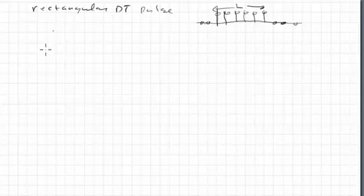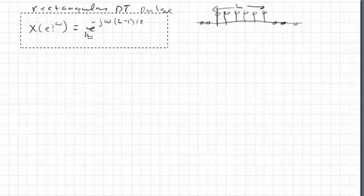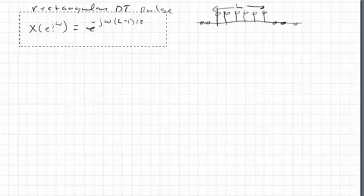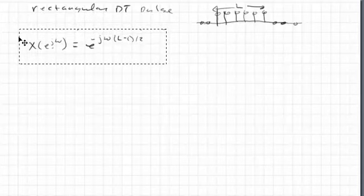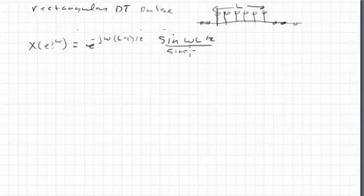We just found out in the previous lecture that in the frequency domain, this thing has a spectrum that looks like this: e to the minus j omega times L minus 1 over 2. And then, I'm going to have to drag this down a little bit. Now I can add on the rest of it, and we factored out the complex exponents and we wound up with sine omega L over 2 over sine omega over 2.